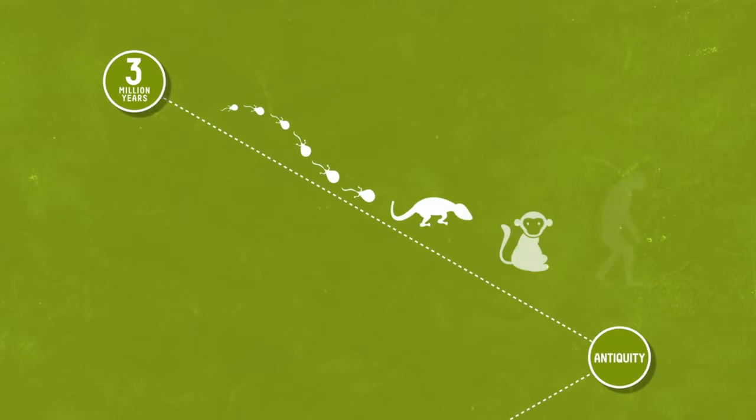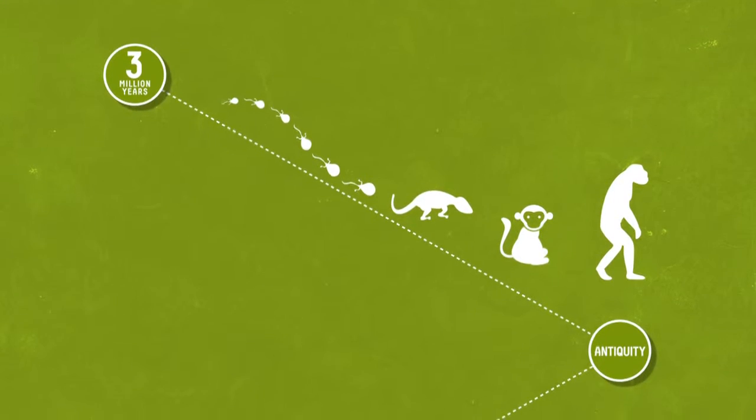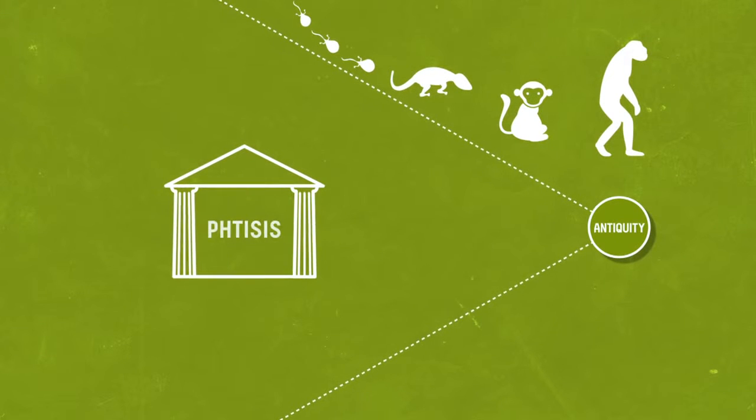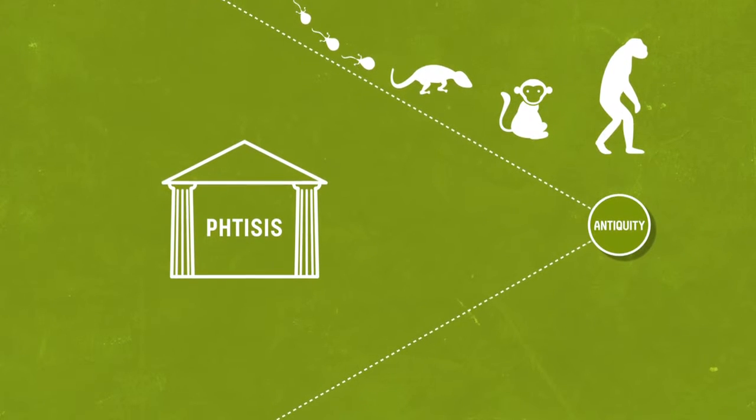Tuberculosis, or TB, is as old as man himself. In ancient times, it was known as phthisis, which means wasting away.